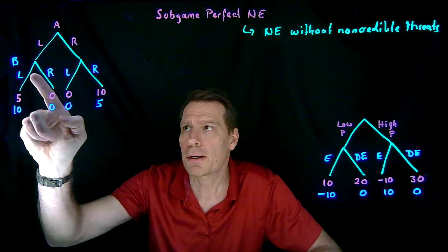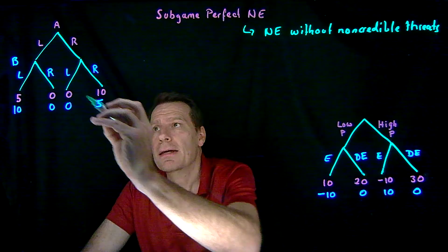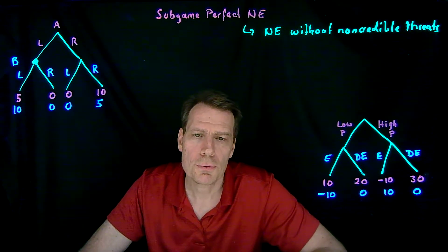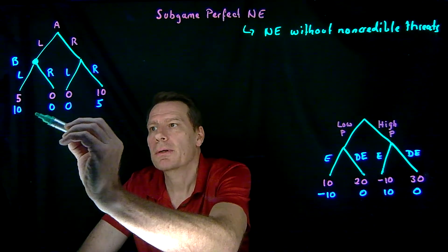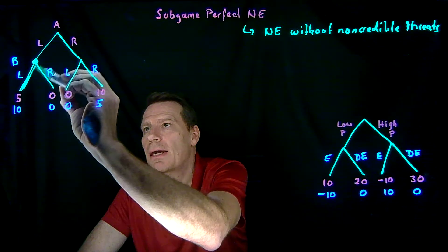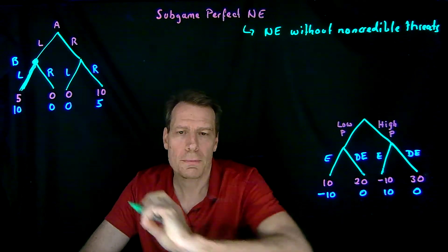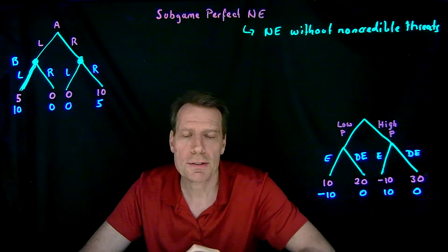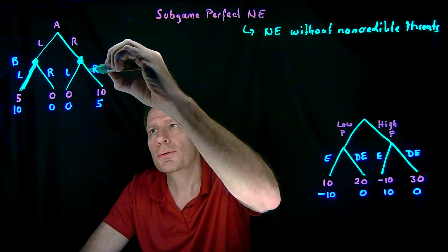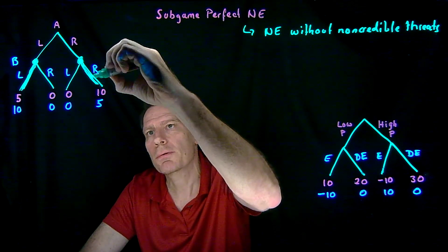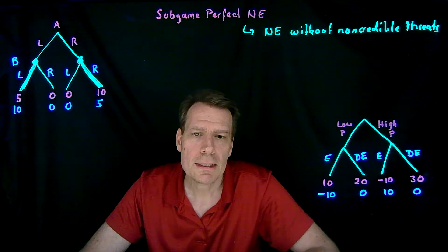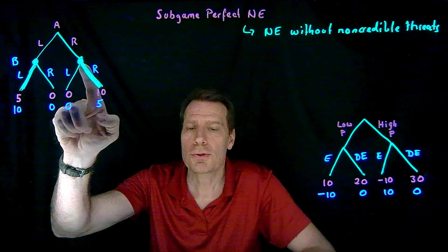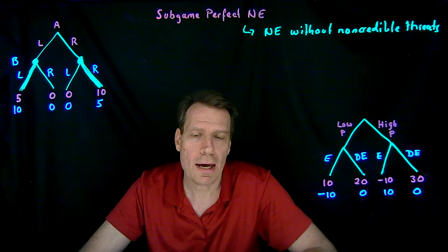We would start with player 2 — the British player — and say, what if that player got to this node? What would be optimal for that player to do from that node? Well, what would be optimal is to choose left, because left gets the player 10 versus right, which gets her 0. Then we'd go to her second node and say, what would be optimal for her to do if she gets to that node? 5 is better than 0, so going right would be optimal. So, eliminating non-credible threats means picking the actions from each node that are optimal from that node if you actually reach the node.